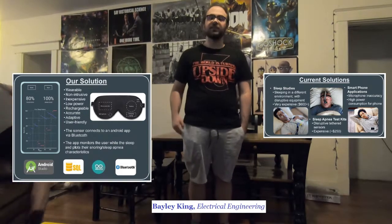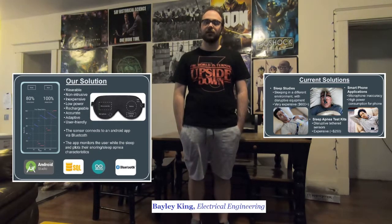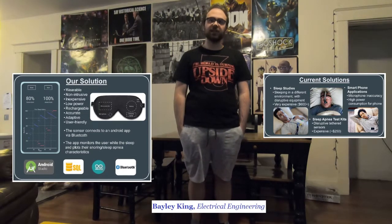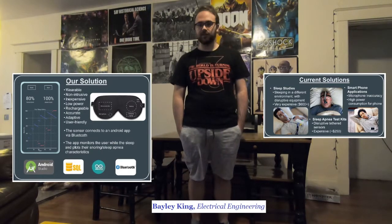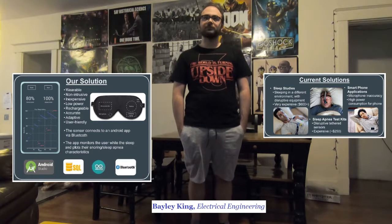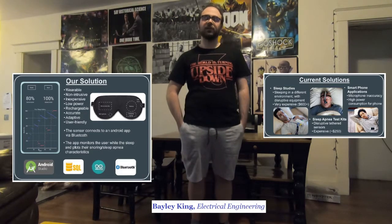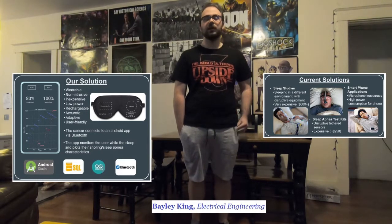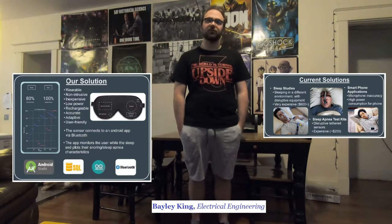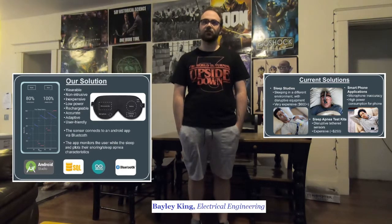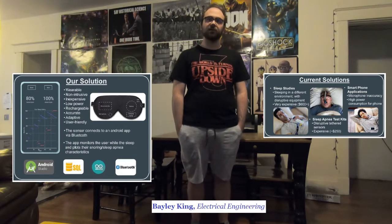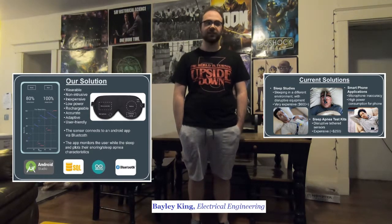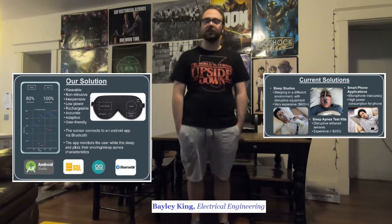We wanted the system to be adaptive — able to detect and filter out unnecessary noise, such as a television or a fan, so those don't influence the results. Looking at our mobile application, you first scan and find the listed device, which is the Arduino we chose. You then connect it and take about 10 measurements over roughly 10 seconds, where it reads the total noise level in the room and sets that as the background noise baseline, which it will then filter out while you sleep.